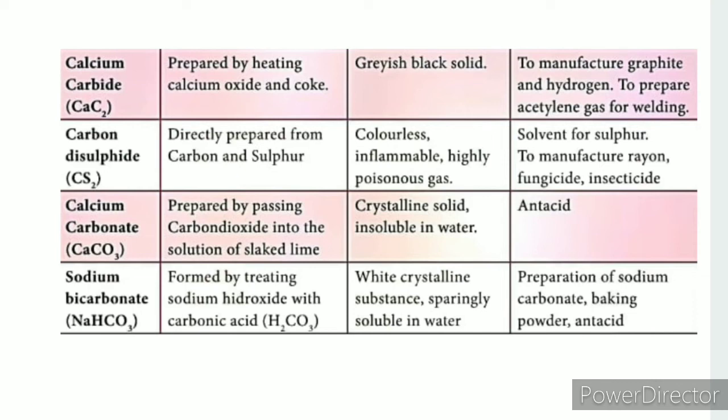Calcium carbide has the formula CaC2. It is produced by heating calcium oxide. It is a black solid. Its uses include: graphite and hydrogen manufacture, building materials, and production of acetylene gas.